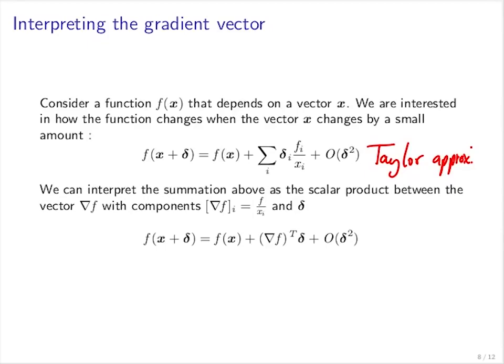And we can rewrite this in a more compact form. You can say, well, the first order Taylor expansion or approximation of f at the position x plus delta is f(x) plus the scalar product between the gradient f at position x times the delta, the small amount that I'm moving away from x plus some term that depends on delta squared.